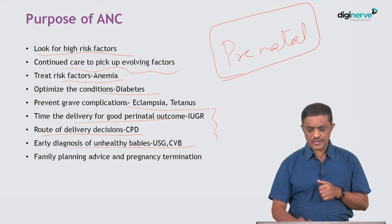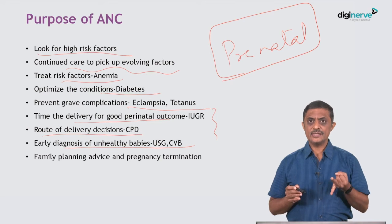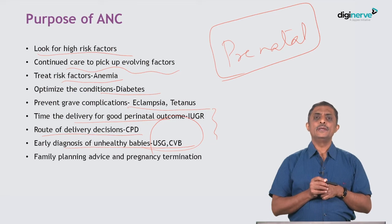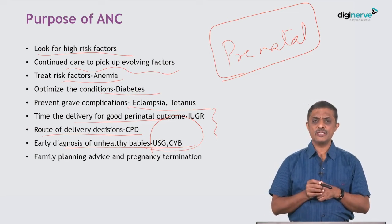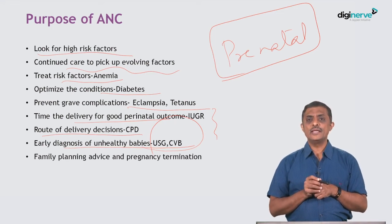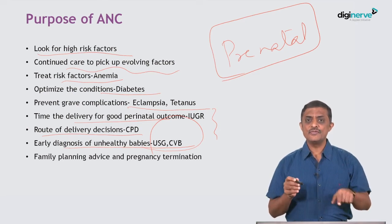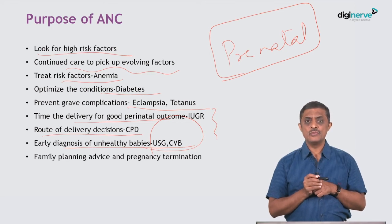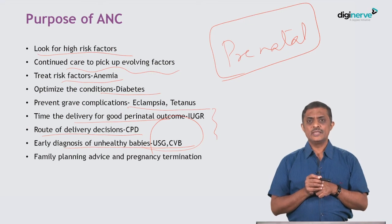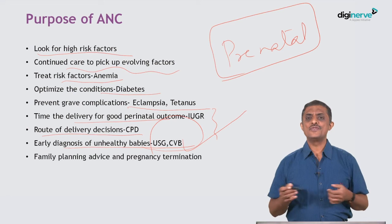Early diagnosis of unhealthy babies is another crucial purpose. The fetus can have issues such as growth problems, anomalies, or abnormal growths, all of which can be picked up with a good antenatal care schedule. This also allows decisions about diagnostic and even therapeutic interventions. Intrauterine fetal therapy is evolving in a big way — intrauterine transfusions can treat fetal anemia, and in twin-to-twin transfusion syndrome, intrauterine fetal surgeries are being performed.